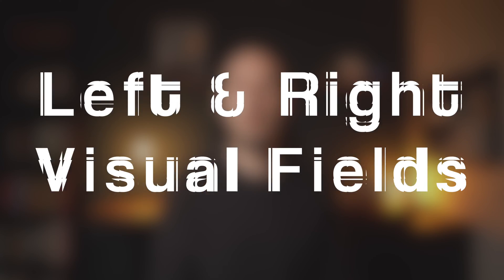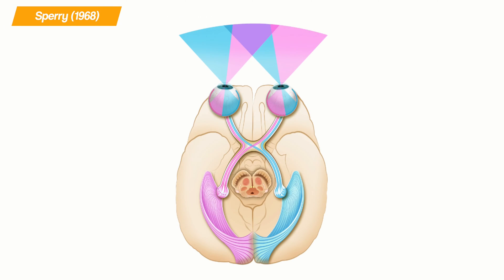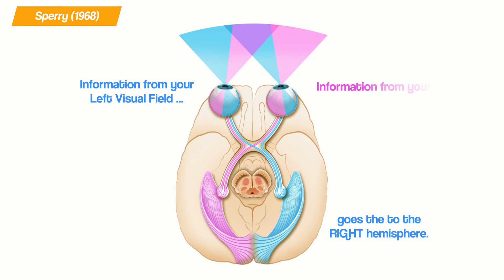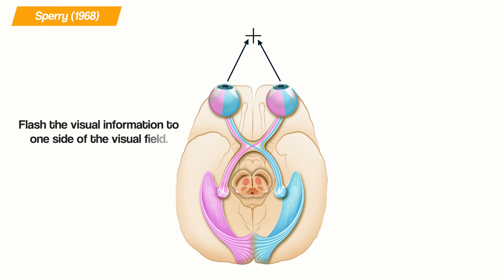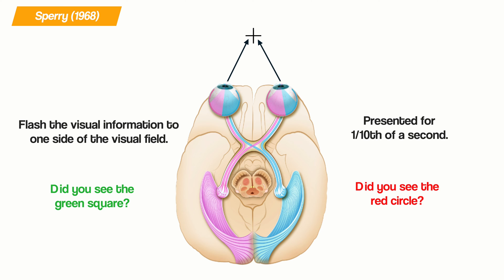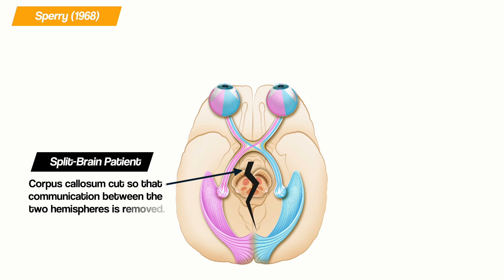To understand what they discovered, we need to talk about left and right visual fields. Information from your left visual field goes to your right hemisphere, and information from the right visual field goes to the left hemisphere. Sperry presented visual information to only one visual field at a time by having participants stare at a cross on a screen, then flashing the visual information to one side of the cross for only one tenth of a second — too quick for them to move their eye across the image. In a split-brain patient, information presented to one hemisphere is not shared with the other, because the corpus callosum has been cut.